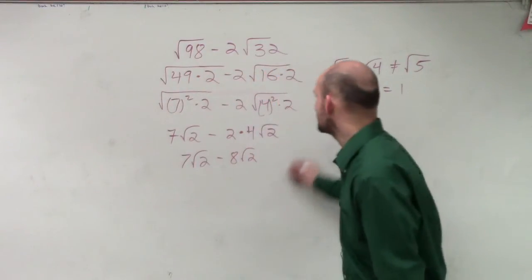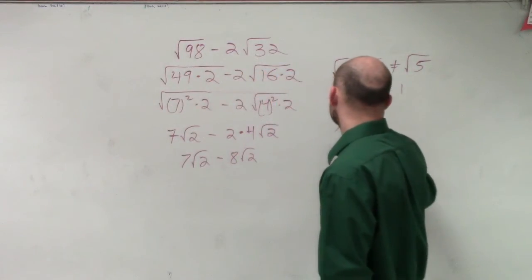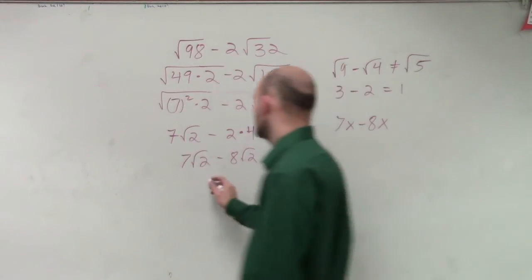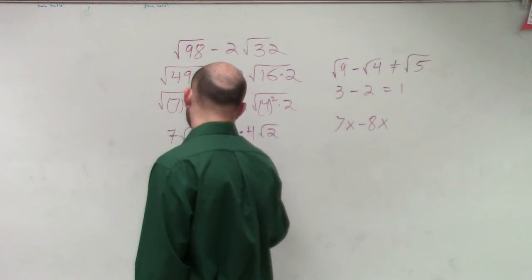Well, ladies and gentlemen, this is just going to be the same thing as 7x minus 8x, which is going to provide you with negative square root of 2.